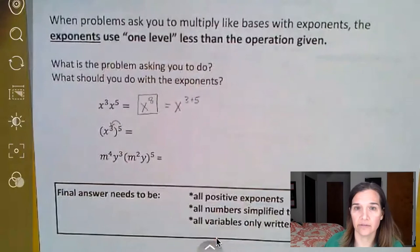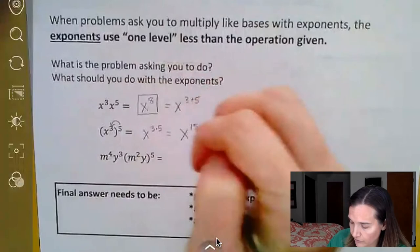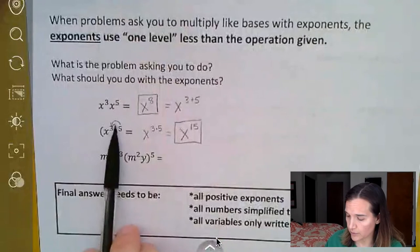Again, I like to think of it as the distributive property for exponents. And we're going to multiply x times three times five. And that's going to give us an exponent of 15. So x to the 15th power on this one.